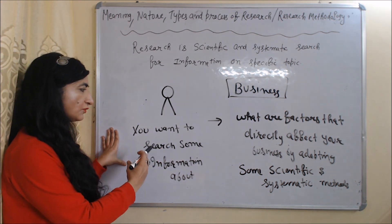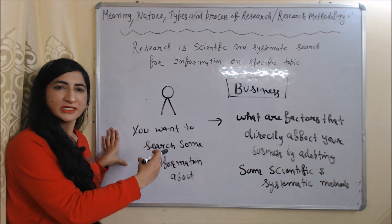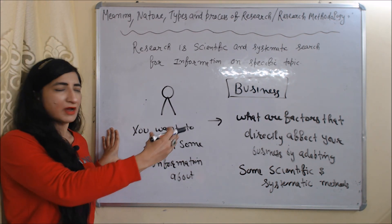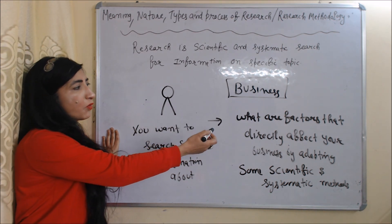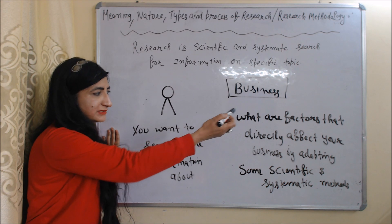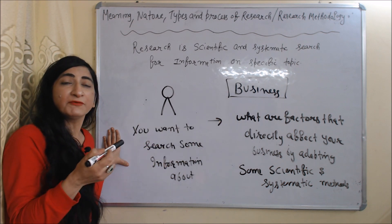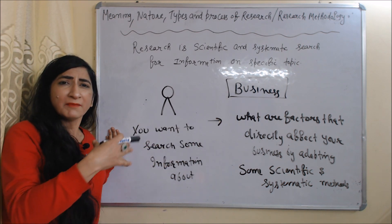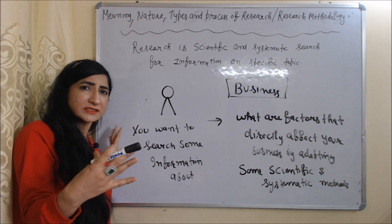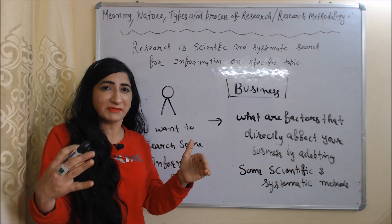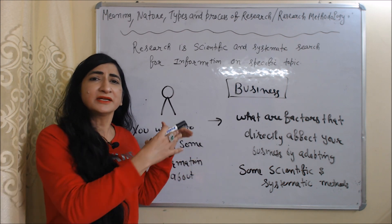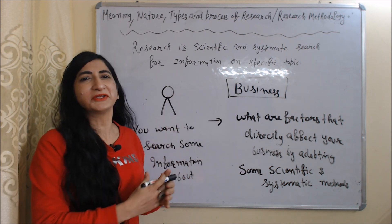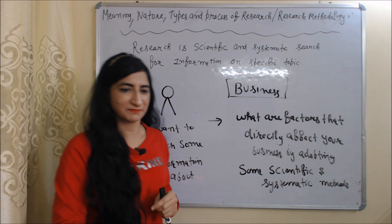For example, you want to search information about what are the factors that directly affect your business profit by adopting some scientific and systematic methods — that will be called your research.